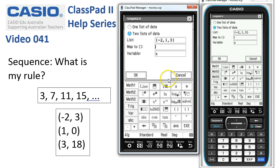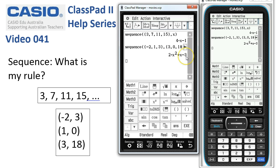We're going to map those values to this list, the y-coordinates. So those will be 3, 0 and 18. And again, that's all we have to do. Tap OK. And here's the defining quadratic that would fit through those points.